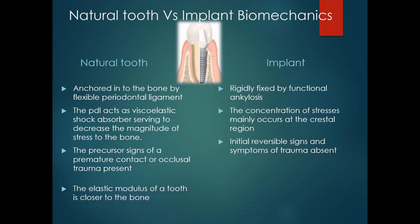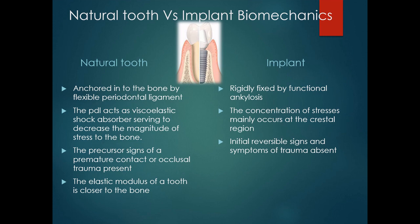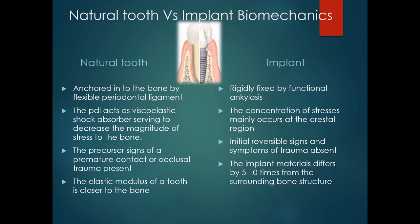The elastic modulus of a tooth is closer to bone than any of the currently available dental implant biomaterials. In the case of an implant, the elastic modulus differs by 5 to 10 times from the surrounding bone structure. The greater the difference in flexibility between the two materials, the greater will be the potential relative motion generated between the two surfaces at the endosteal region.